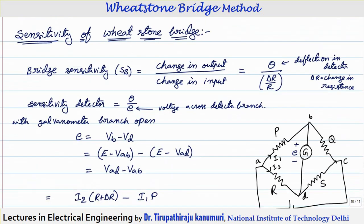Now let us examine the sensitivity of the Wheatstone bridge, since it must accurately detect whether current is zero or non-zero. The bridge sensitivity is defined as the change in output divided by the change in input. The output is the deflection θ of the galvanometer, and the input is the fractional change in resistance δR/R — that is, when R changes from R to R + δR, the change in input is δR/R. The sensitivity of the detector S_V equals θ divided by the voltage E across the detector branch.